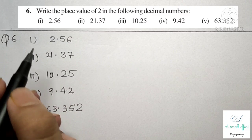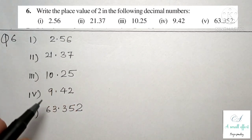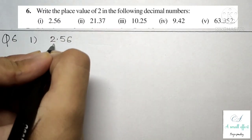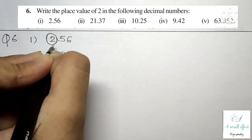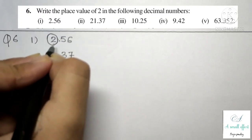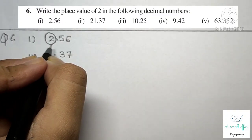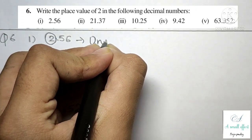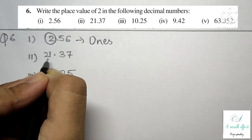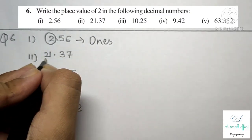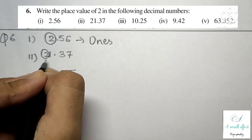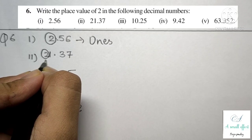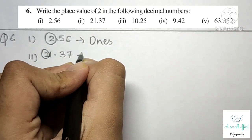Question number 6: write the place value of 2 in the following decimal numbers. First part: 2.56 — 2 is on the left side of the decimal point in the starting position, so its place value is ones (1s). Second part: 21.37 — 2 is on the left side of the decimal point in the second position, so its place value is tens (10s).